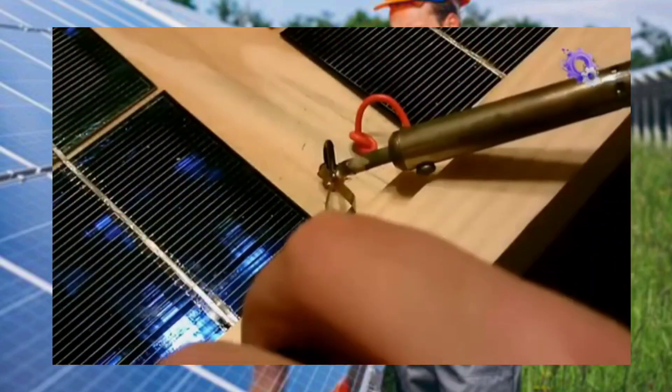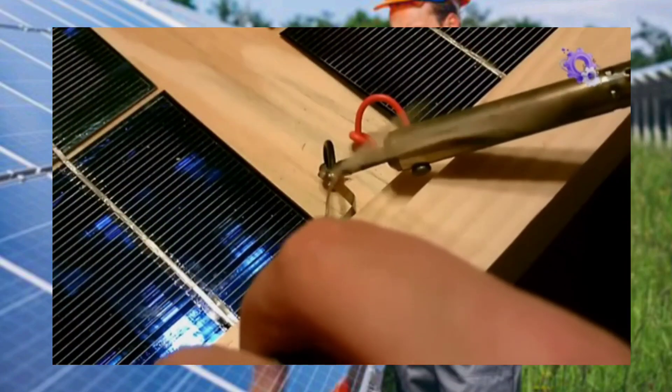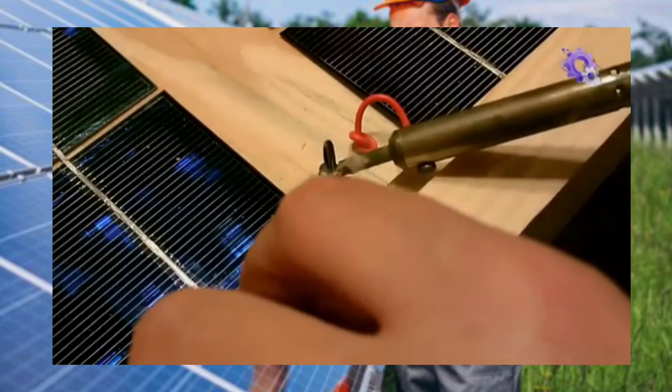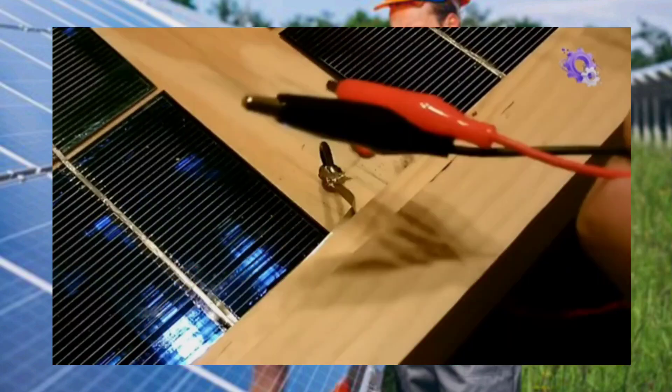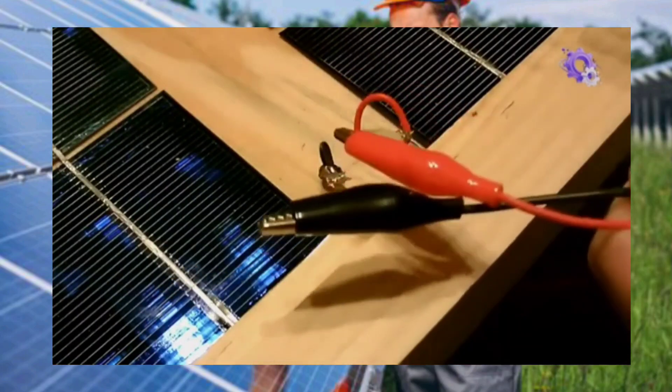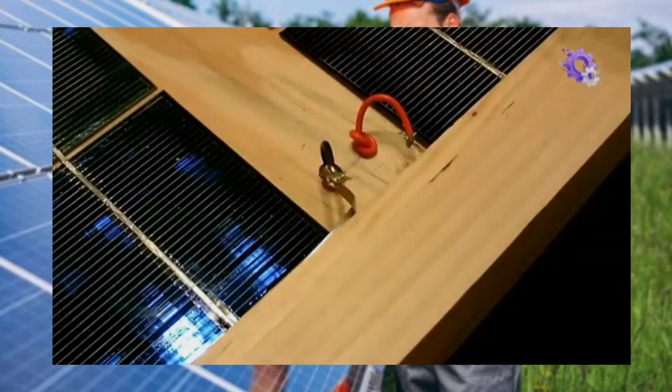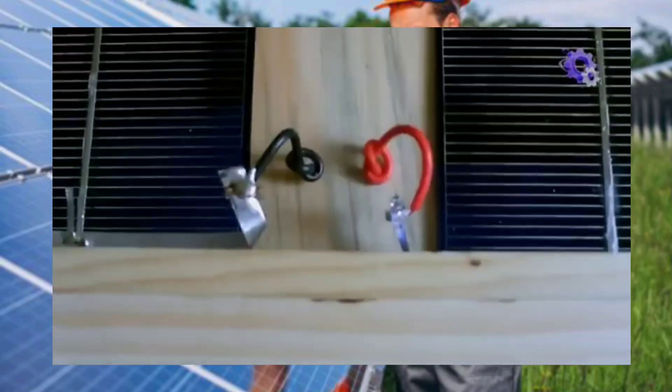Proper wiring is essential for ensuring the efficient flow of electricity generated by your solar panel. This involves connecting the solar cells in series or parallel configurations depending on your desired voltage and current output.